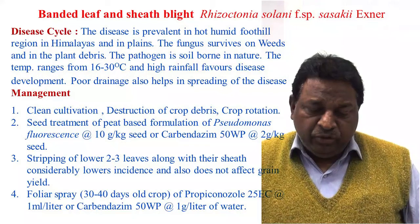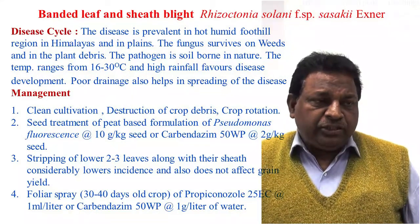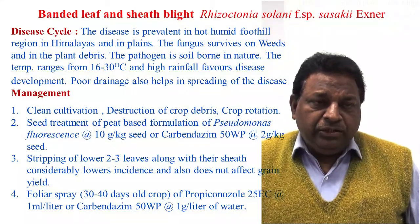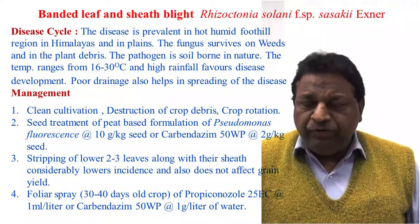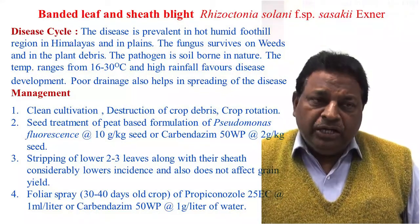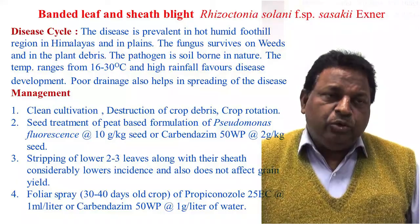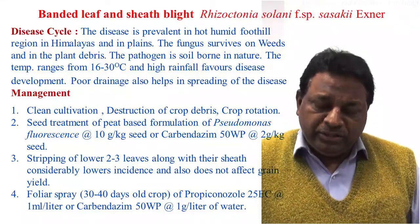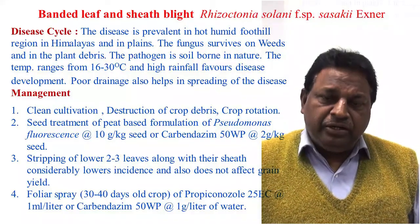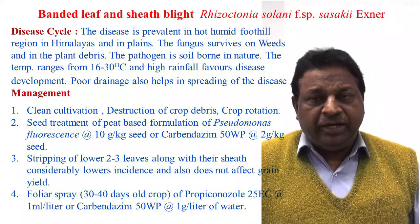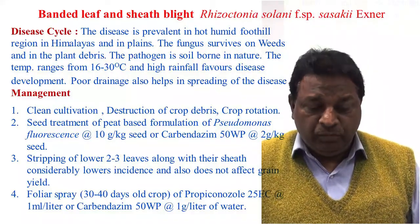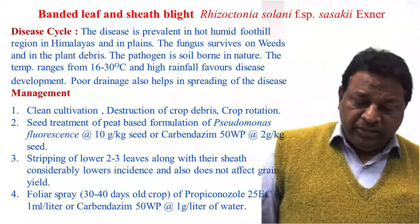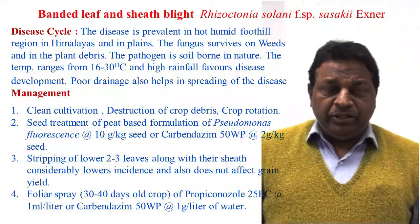For management of Banded Leaf and Seed Blight: first, a field with a good drainage system will definitely reduce the chances of the disease. Second, clean cultivation — if any infected plant parts are present, they should be removed from the field.